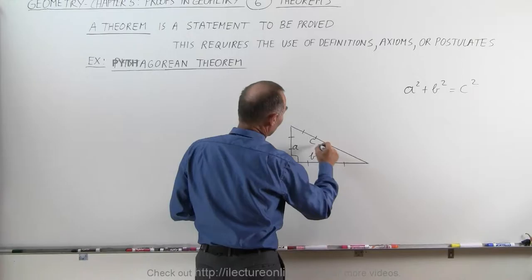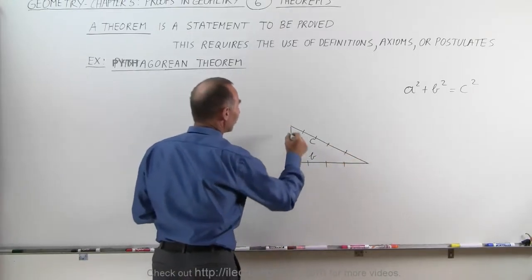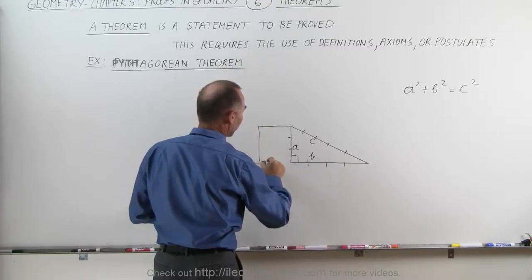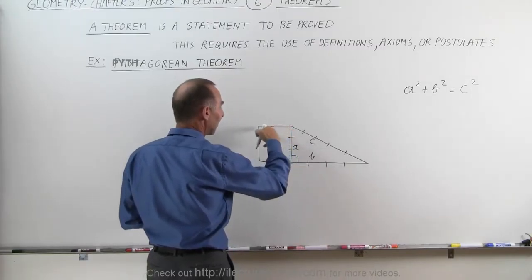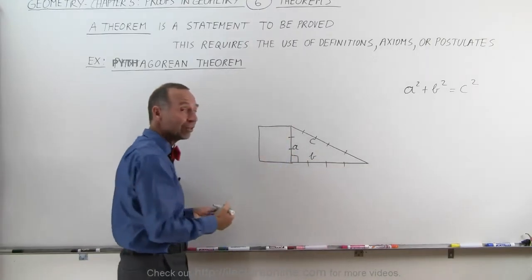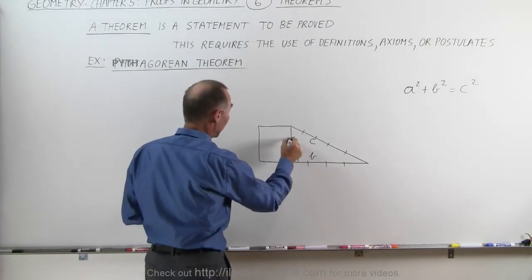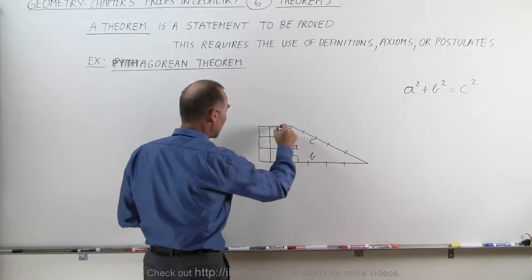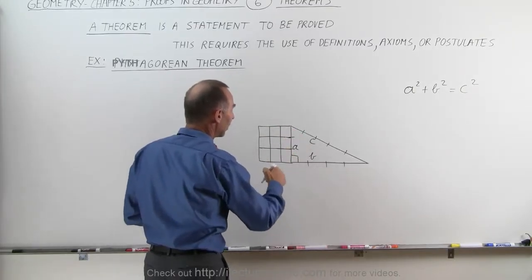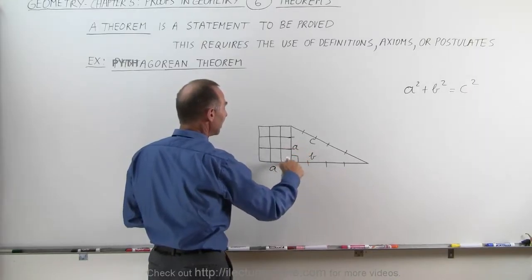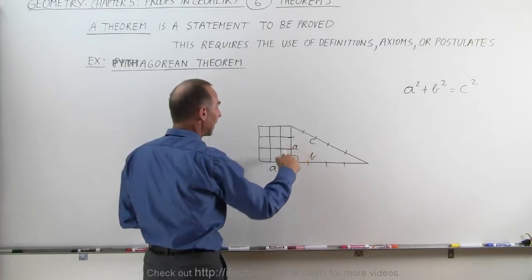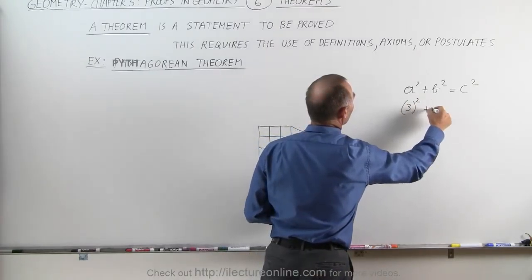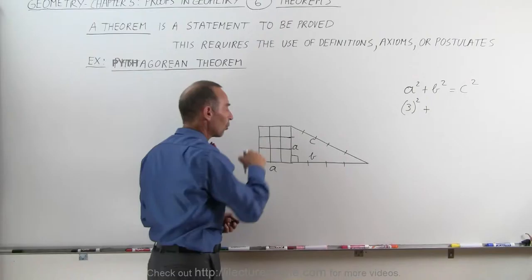One way to show that graphically is to represent each side as a square. Notice that if we take A times A, that's A squared, that would be the area of this square. When we equally divide it out, you can see that A times A, if A equals three, then A times A equals nine. So this would be three squared, nine squares here.